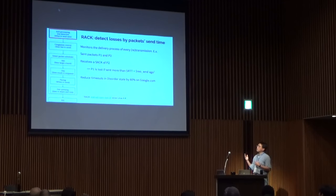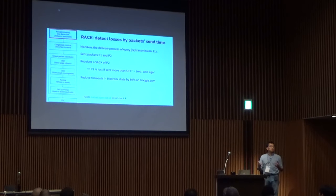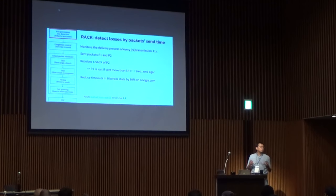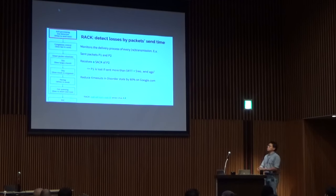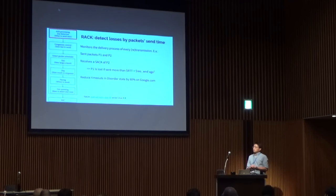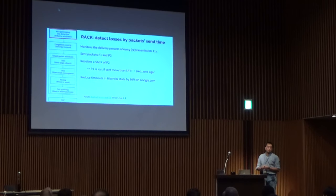This idea works very well. It actually reduced the number of timeouts in the disordered state in TCP — where you receive out-of-order delivery and couldn't quite determine whether it was reordering or loss. A lot of the time, if you didn't count enough dupacks, you would resort to timeouts. But this RACK approach has effectively reduced timeouts by a large percentage, and we have defined an RFC draft with the details.